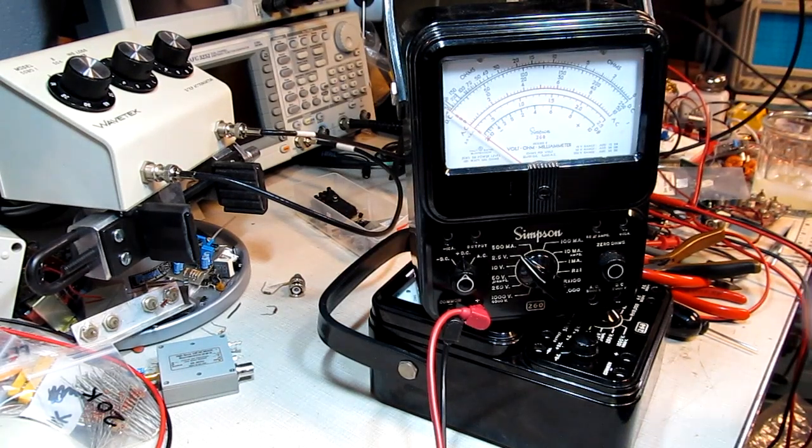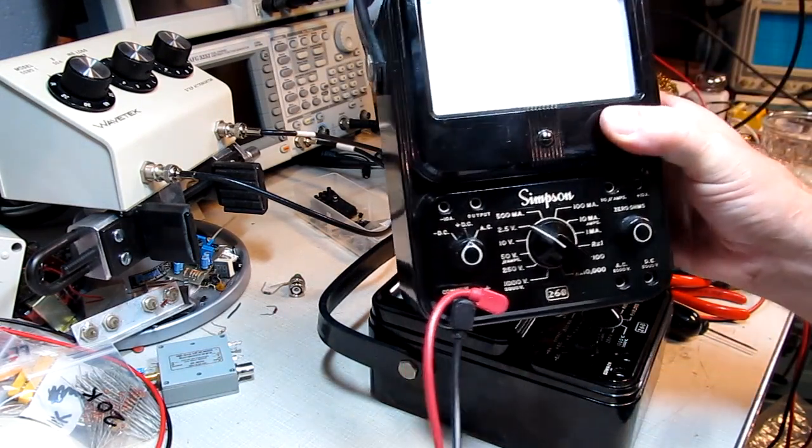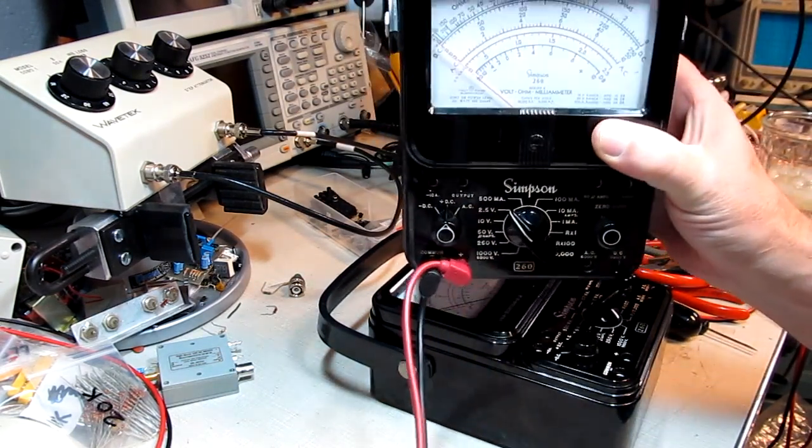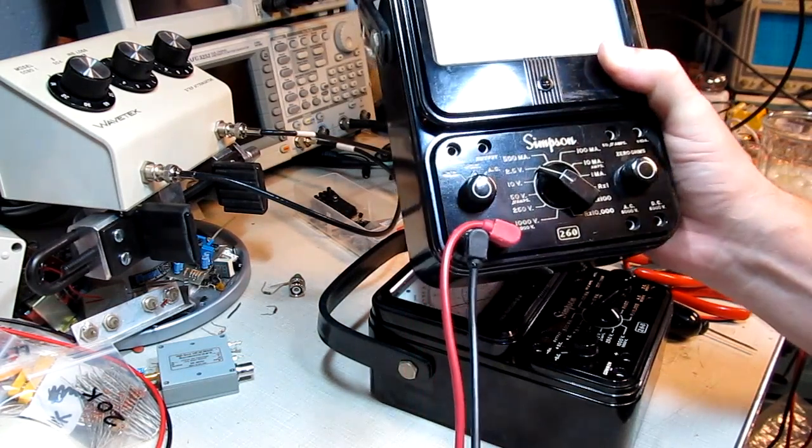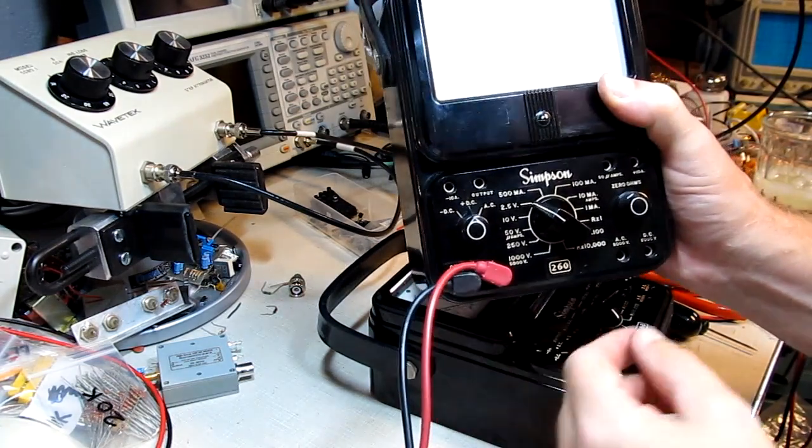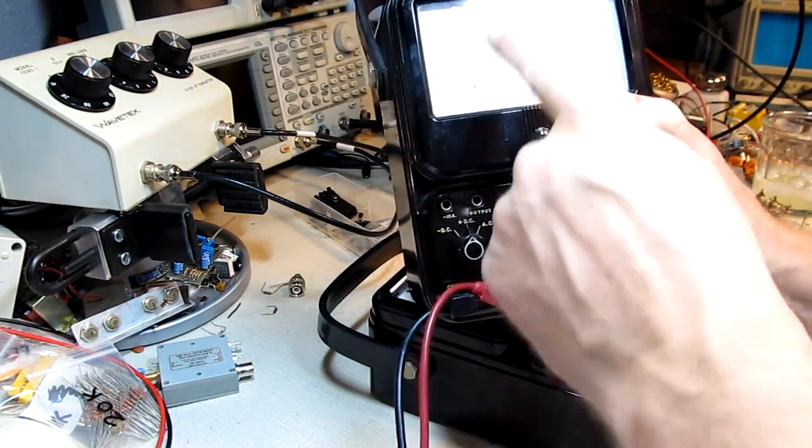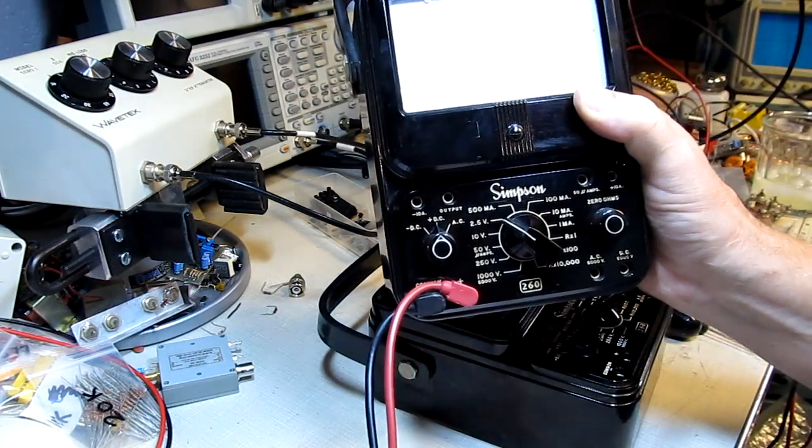If you've watched some of my videos, you may have seen me use this old Simpson 260 volt ohm meter, probably the classic of the industry. Really great volt ohm meter, really rugged. I like to use it when I'm tuning circuits to actually watch things move. It's a lot easier to watch a needle move than numbers on a multimeter.